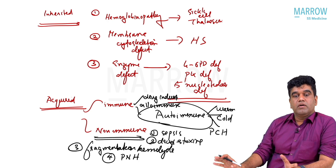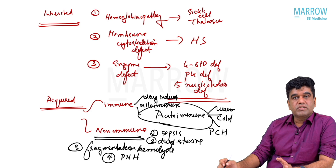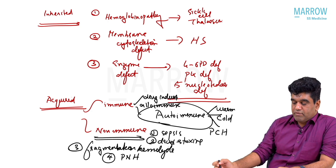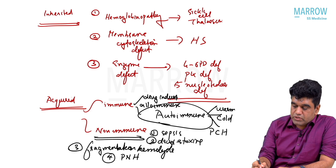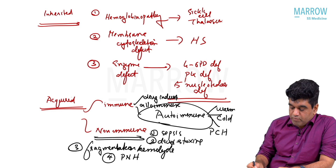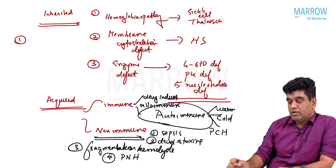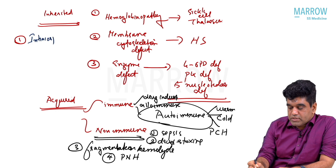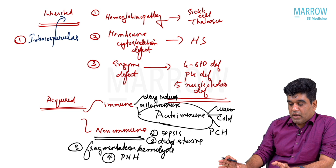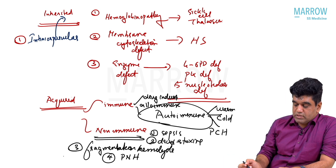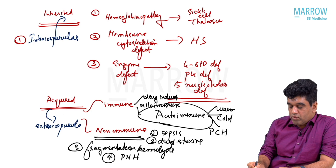Let us draw some conclusions. Inherited causes of hemolysis all generally have some kind of intracorpuscular defect — the problem is within the RBC. Whereas the acquired causes are all basically extracorpuscular. Antibody comes from outside, drugs come from outside, sepsis toxins come from outside.